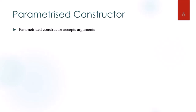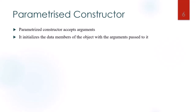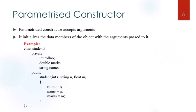Next is the parameterized constructor. As the word indicates, it is going to accept arguments. It initializes the data members of the object with the arguments passed to it. In the example, data members are declared as private and the parameterized constructor accepts three parameters. The variable 'r' assigns a value to the data member 'roll number', string 'n' assigns to 'name', and 'm' assigns to 'marks'.